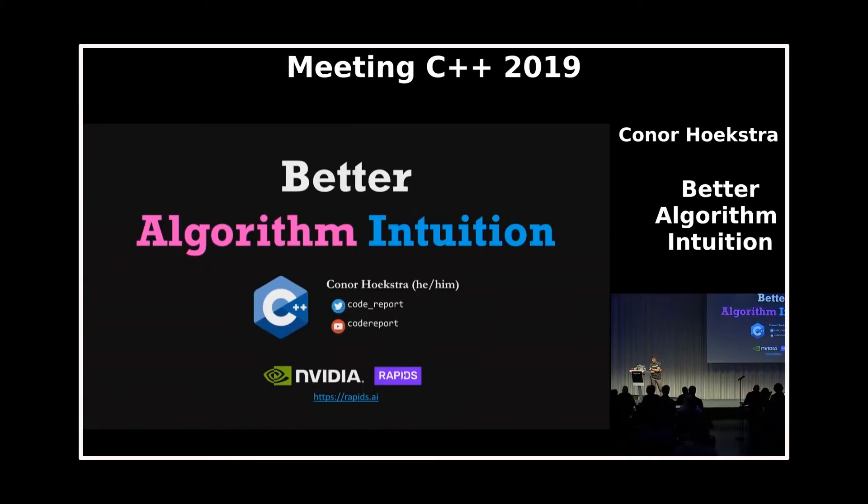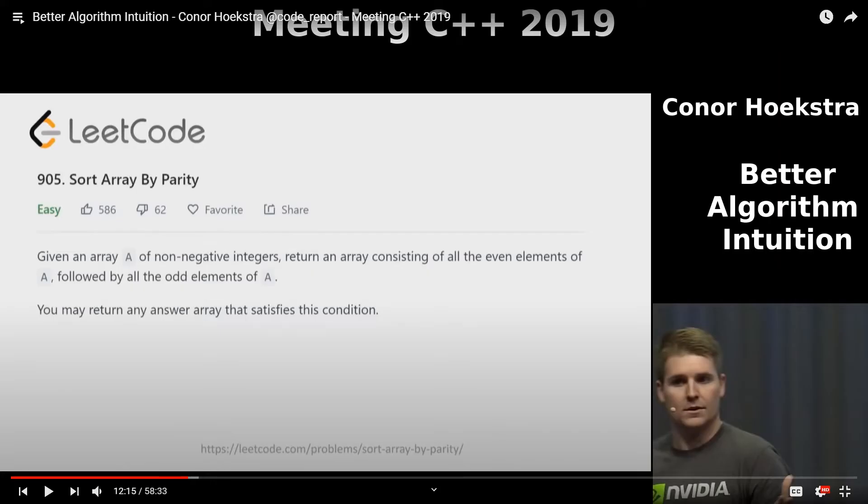So the example that I'm going to use is actually a problem that I covered in one of the second talks that I gave in 2019 called Better Algorithm Intuition. And the problem is the following. It's problem 905 from LeetCode called SortArrayByParity. It says, given an array A of non-negative integers, return an array consisting of all of the even elements of A followed by all the odd elements of A.